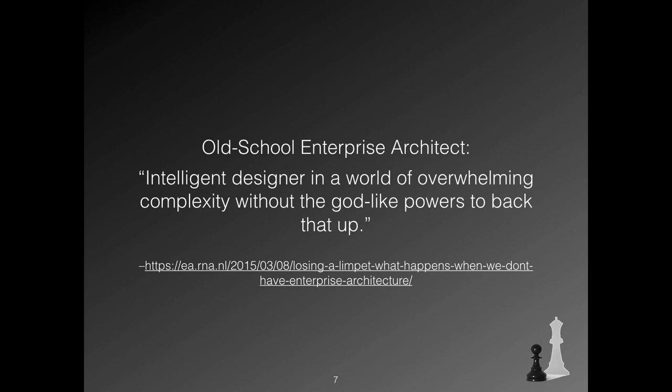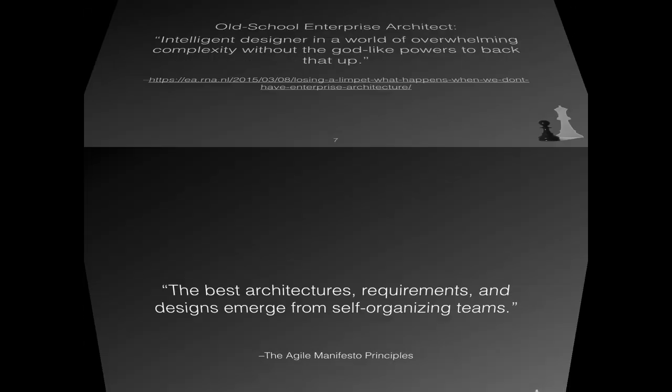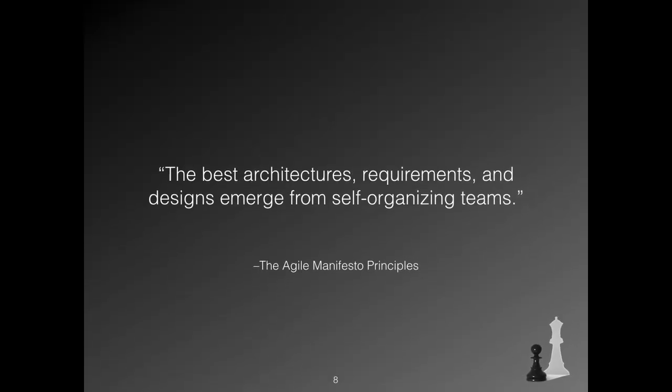Back to architecture — what is architecture? According to the principles of the Agile Manifesto, it emerges from teams. Of course, it doesn't really say what architecture is; it only says where it is coming from. And while you know the ISO definition — 'fundamental concepts and properties' — what those fundamental concepts and properties are is nowhere defined.